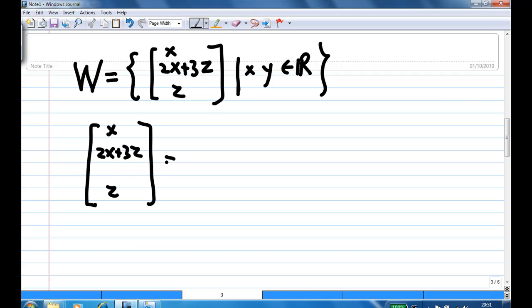So any vector in W can be written as x, 2x plus 3z, and z. Now, we split them up into two columns. One column consists of x, 2x, and one column consists of z, 0, 3z, z.